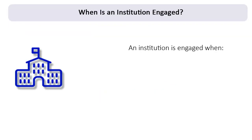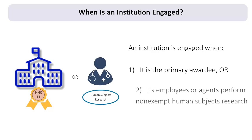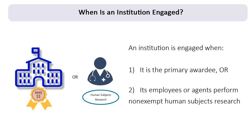In general, an institution is engaged when it is the primary awardee of HHS funding for the conduct of human subjects research, or when its employees or agents perform HHS-supported or conducted non-exempt human subjects research, as defined in the Common Rule.